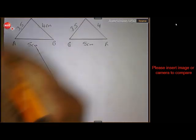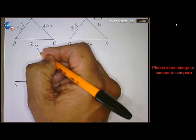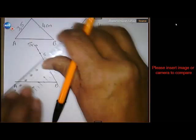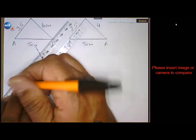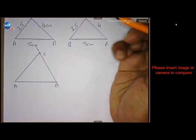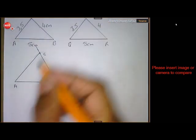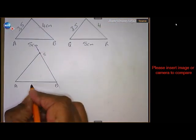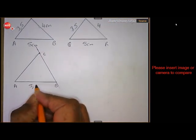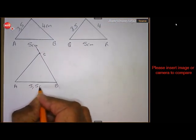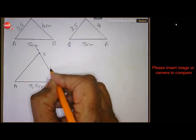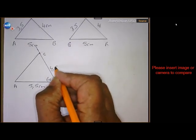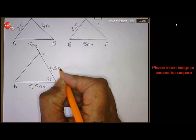So this should be point C. Let's put in the values: this was 5.5 centimeters, this angle 60 degrees, and this 4.5 centimeters.